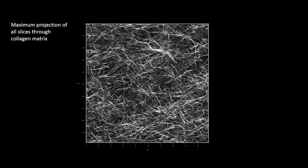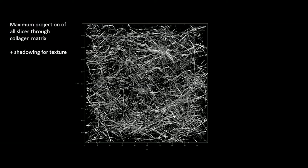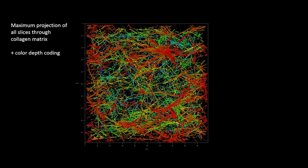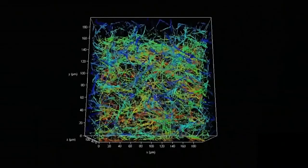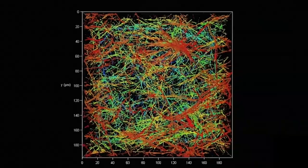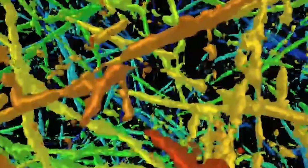You can take those 200 slices and do a maximum projection — bring them all together like taking a pancake and slapping it down. But you still don't get an idea of the depth. You can add shadowing, but that doesn't help much either. Here's what really helps: add a color lookup table called color depth coding, where the red is the stuff closest to the top and blue is the stuff farthest away. This is a way to present 3D data in 2D so you get an idea of the depth. But what we really want is to see it in true 3D — and we can rotate it, play with it, and do measurements anywhere within that volume.